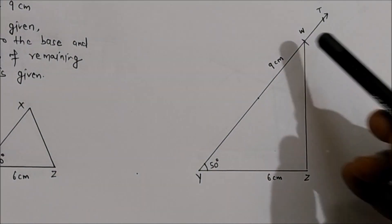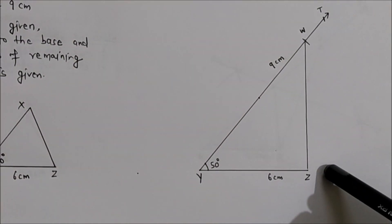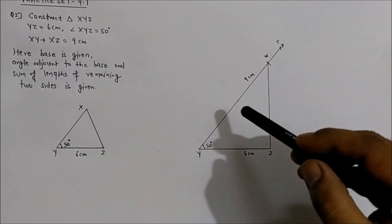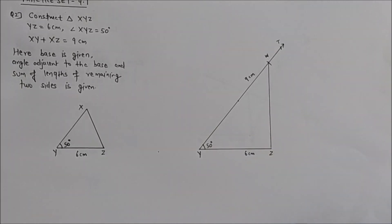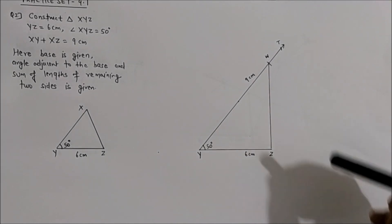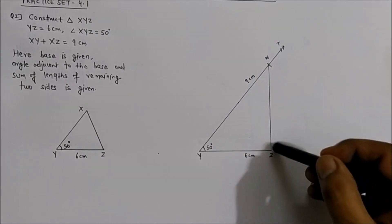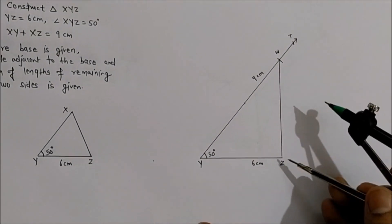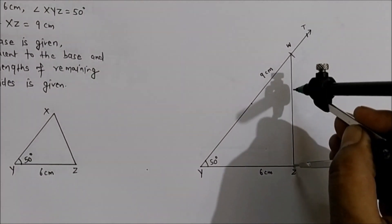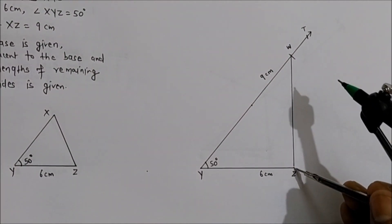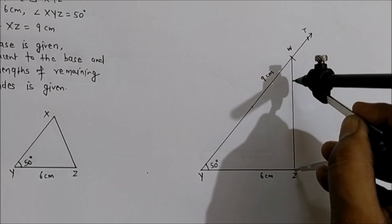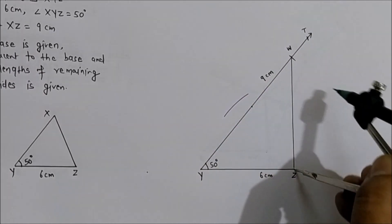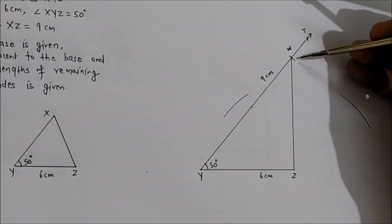We now have triangle WYZ, but we need triangle XYZ — point X will be located on ray YW. For that, we draw the perpendicular bisector of WZ. Keep the compass on point Z, take more than half the distance, and cut arcs on either side of segment WZ from both Z and W.